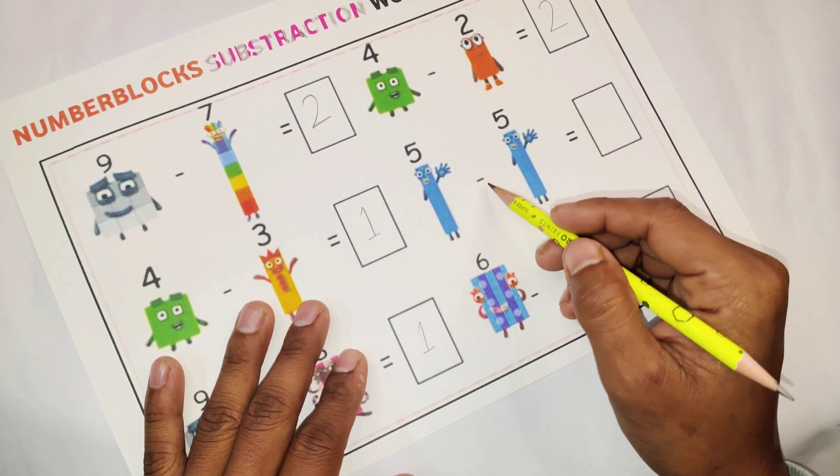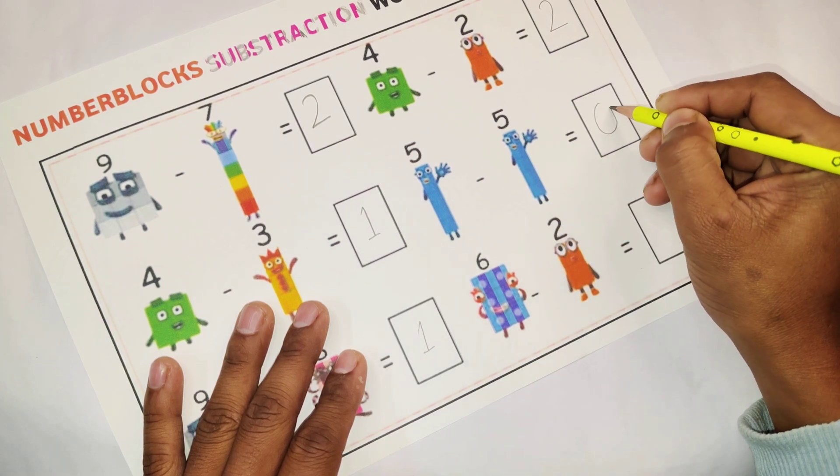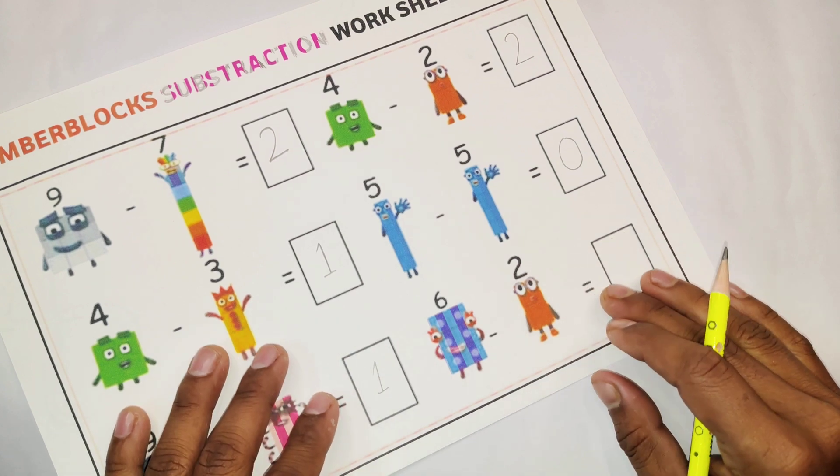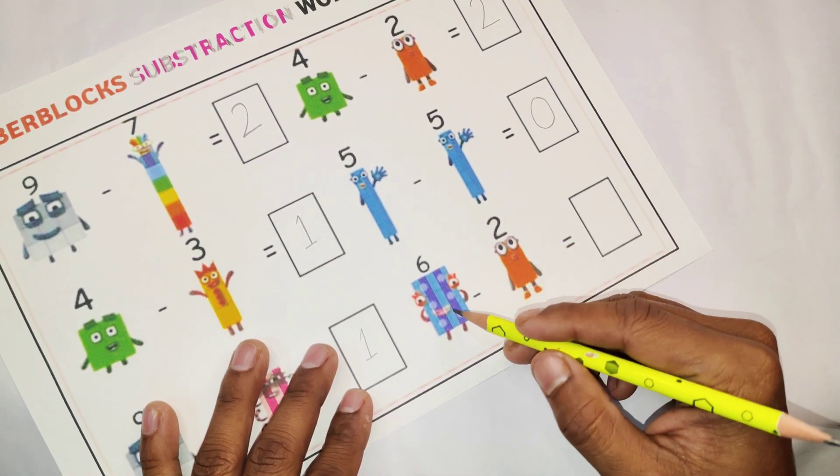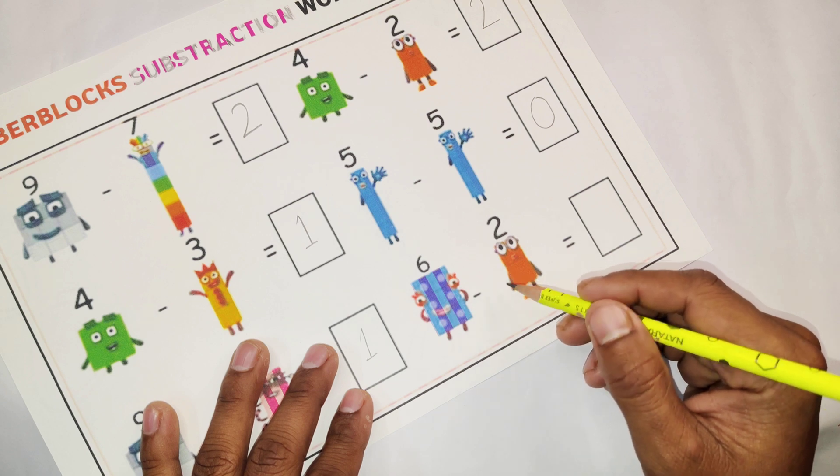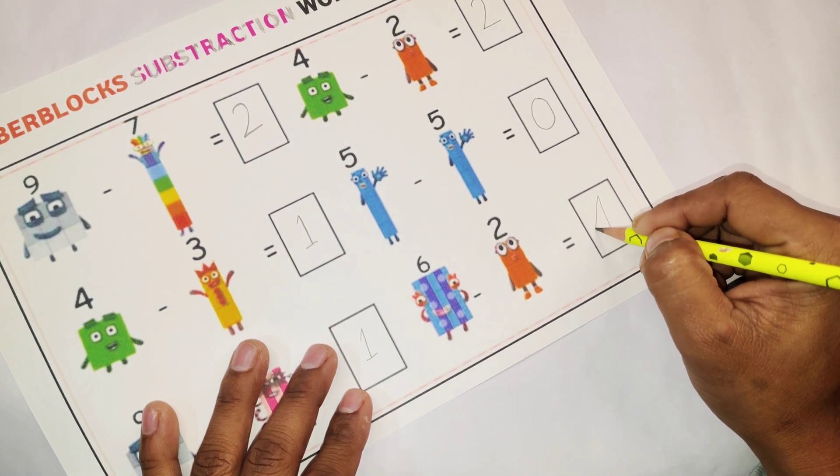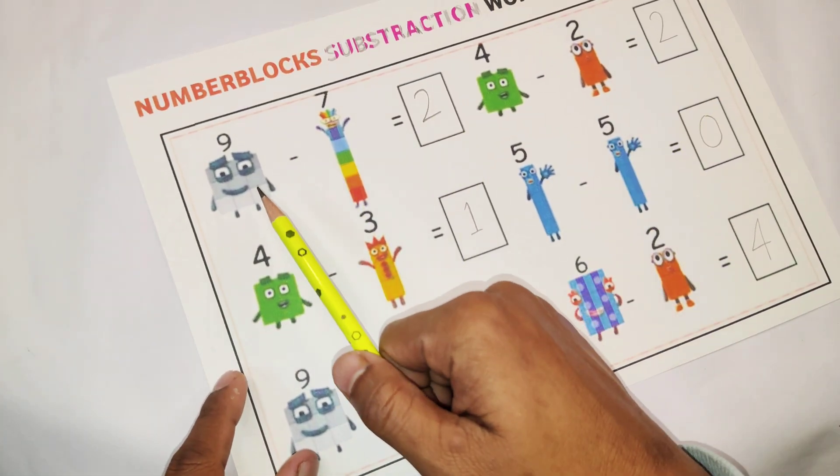Next, 5 minus 5. Wow! 5 minus 5 is equal to 0. Our next subtraction, 6 minus 2. 6 minus 2 is equal to 4. Next subtraction, 6 minus 5 is equal to 1.